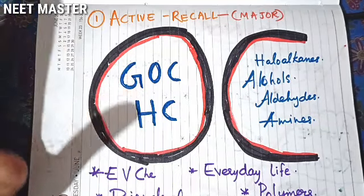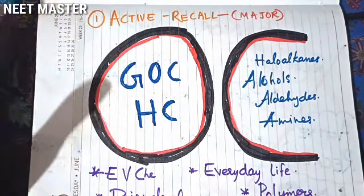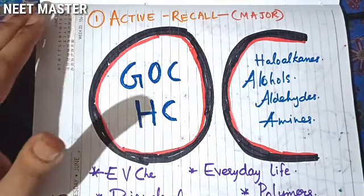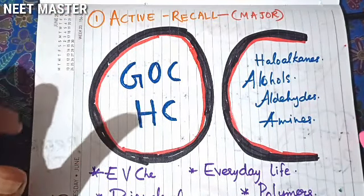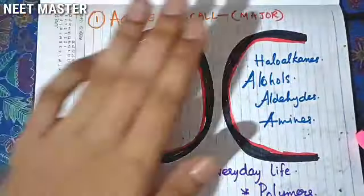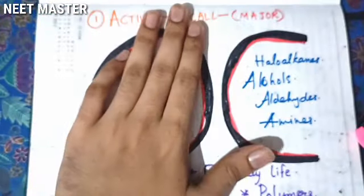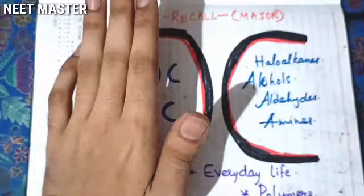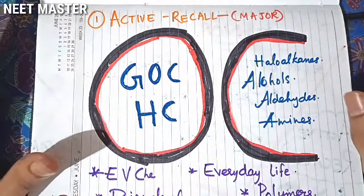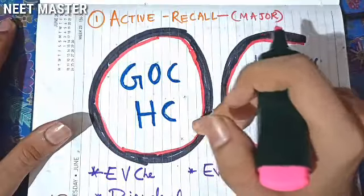Some basic concepts of organic chemistry — General Organic Chemistry (G.O.C.) — and then hydrocarbons. These two parts have the same weightage. When we have the entire question set, we have hydrocarbons and G.O.C. questions.